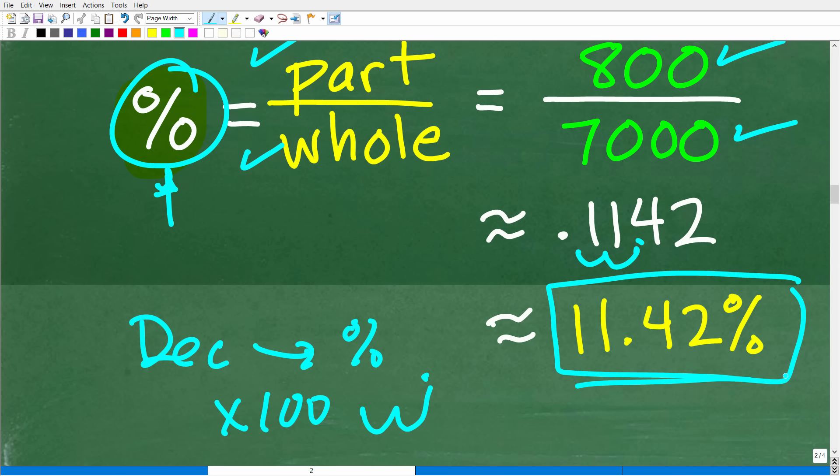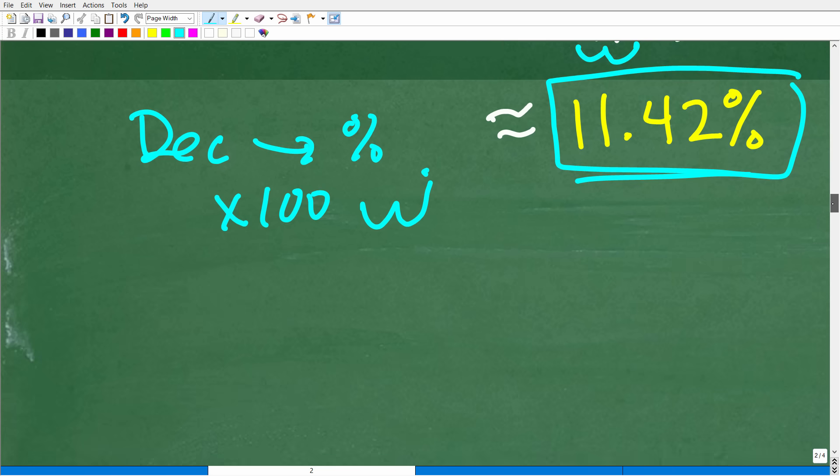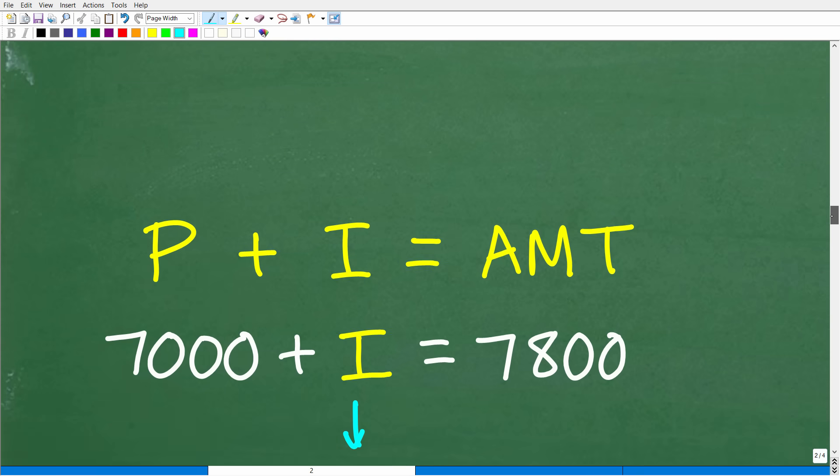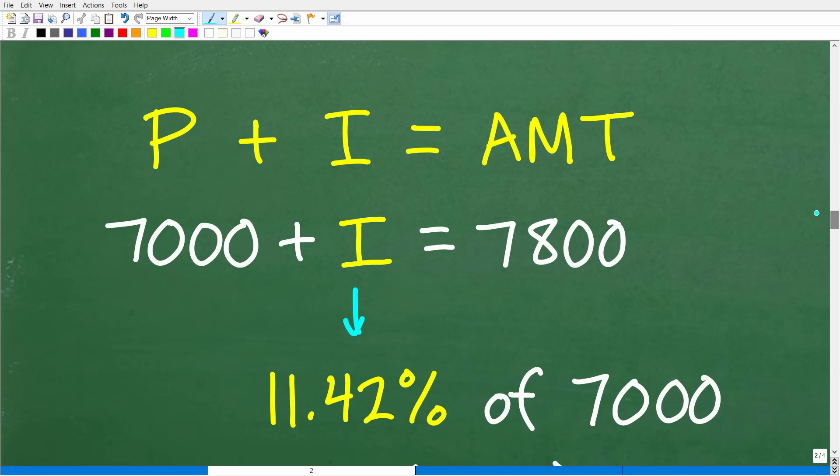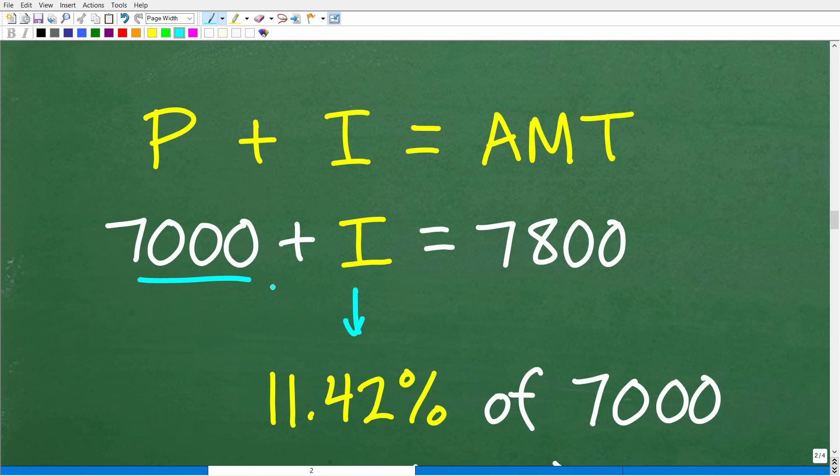All right, so here is our answer, 11.42%. And this would be the amount that the bank would, in fact, give us. So essentially, our principal is $7,000, right? So we're like, all right, the bank is going to give me 11.42% on my money.